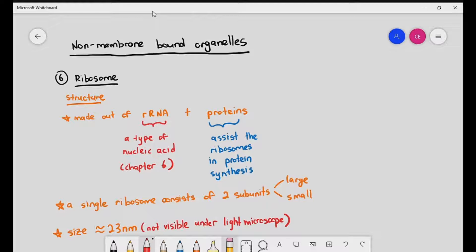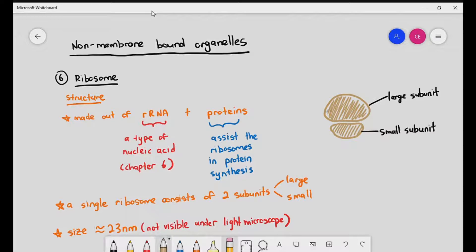Anything smaller than 200 nanometers, you're not going to be able to see it. So if you want to be able to see a ribosome, you need to be using an electron microscope. You can see that the ribosome itself is made up of the larger and smaller subunit. Together, they form one ribosome.